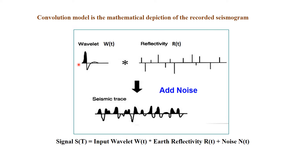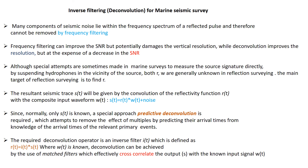The convolution model for recorded seismic states that a seismic trace is the convolution of the input wavelet and the reflectivity series. Our geological objective is to recover the reflectivity series. Deconvolution addresses the fact that many noise components lie within the frequency spectrum and cannot be removed by frequency filtering alone, as that only improves S/N but damages vertical resolution. Inverse filtering or deconvolution increases resolution. Predictive deconvolution is generally used to remove multiples by predicting the arrival times of waves from knowledge of the primary event arrival times.